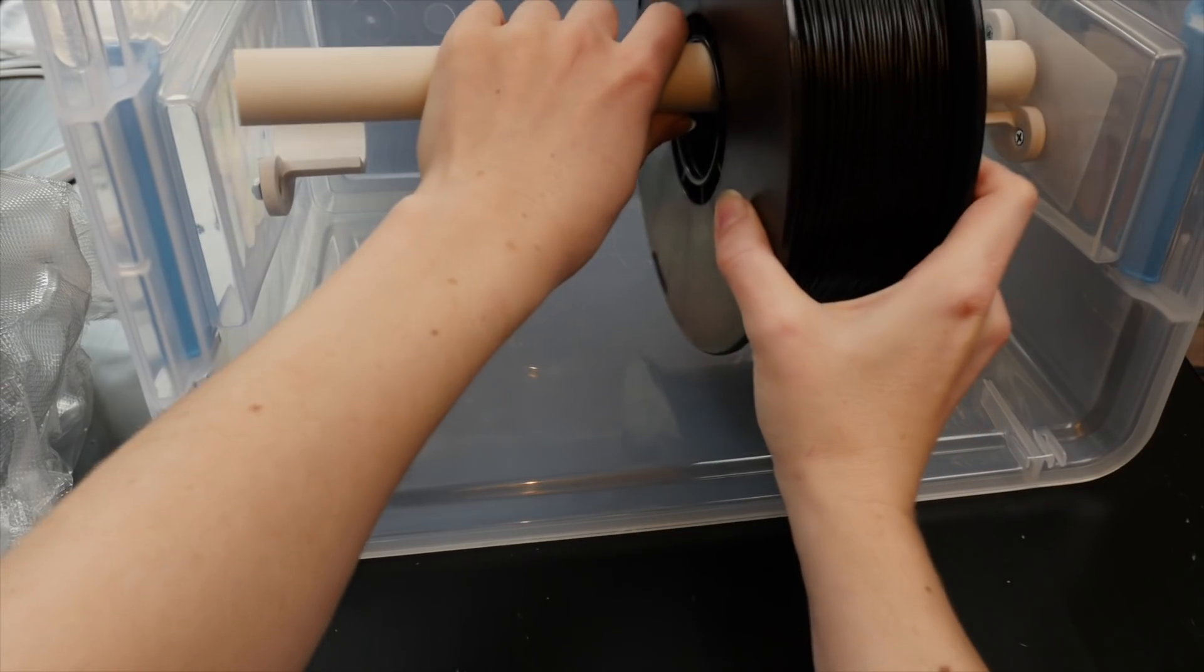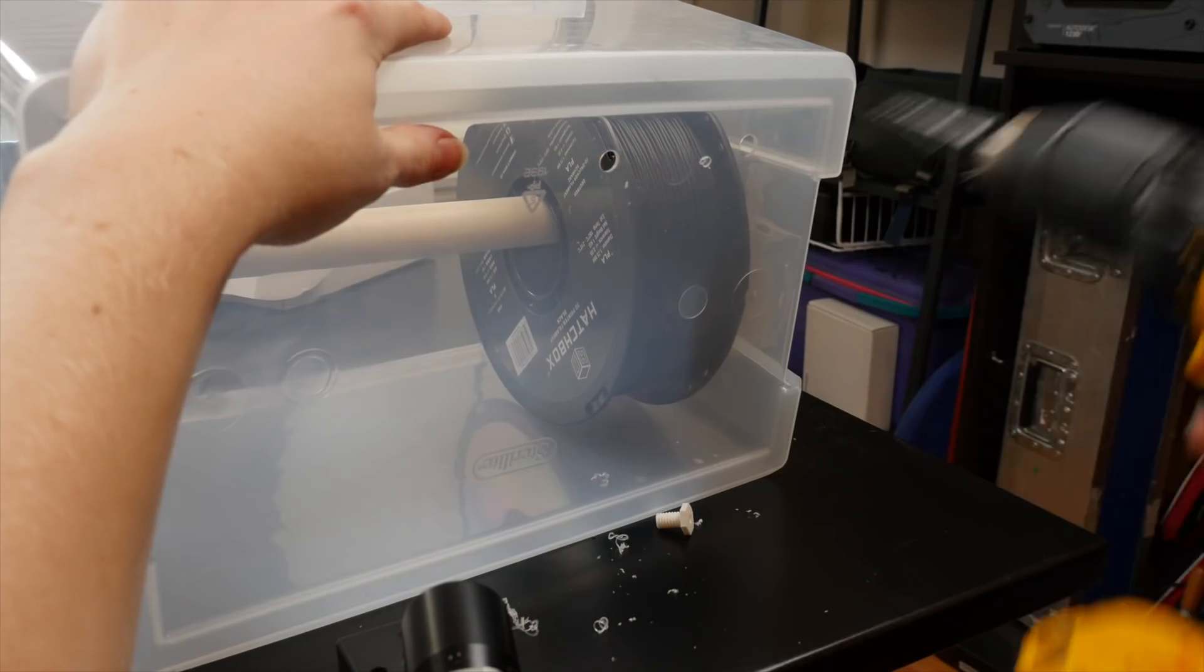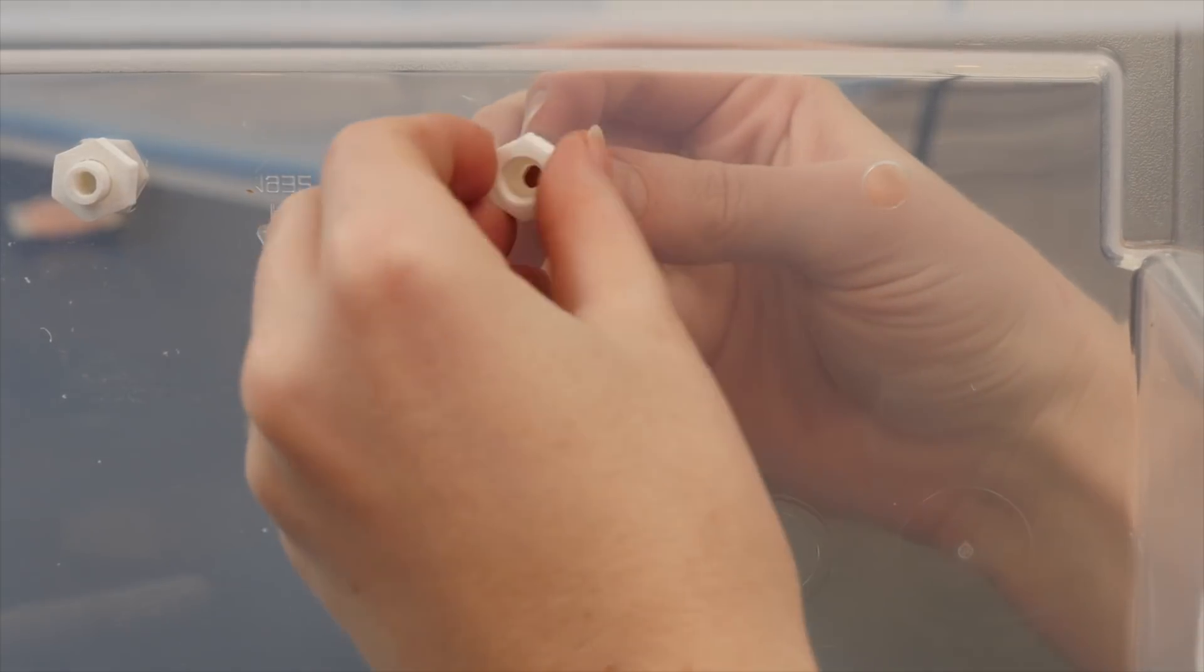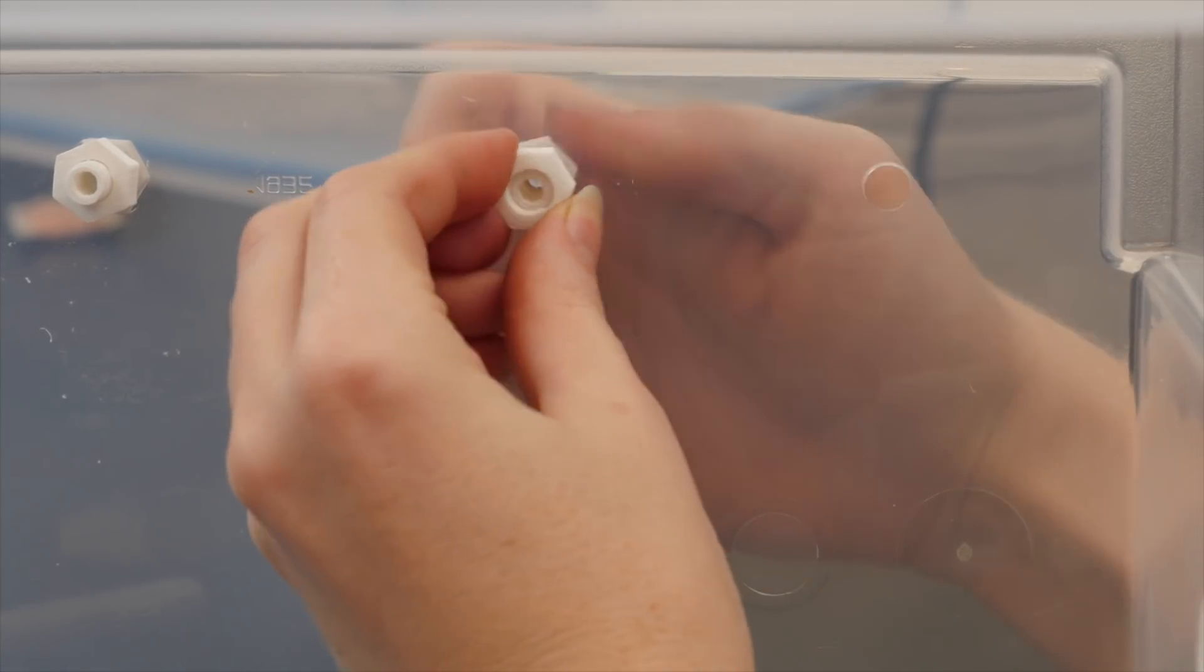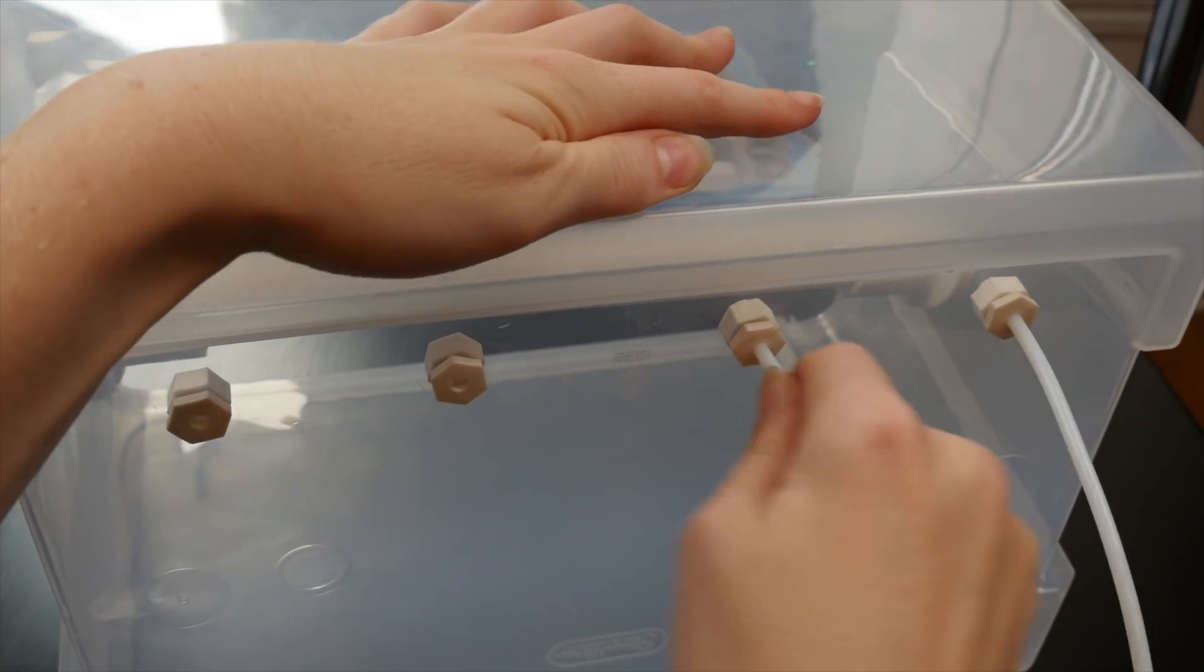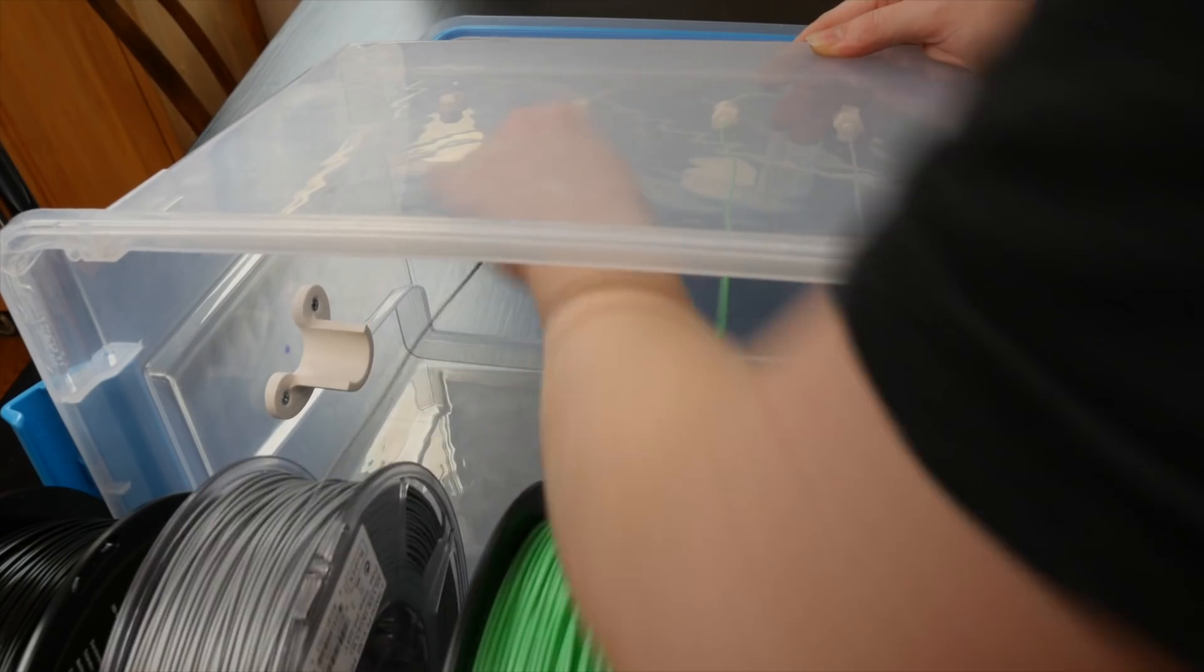I test fit a roll to find the natural unspooling level of the filament and drilled more holes to accommodate the filament feeders, which also get o-rings before being tightened and fitted with a piece of teflon tubing, which keeps dust and air off the filament on its way to the printer.